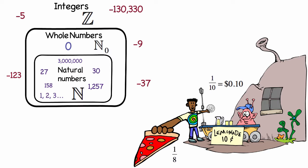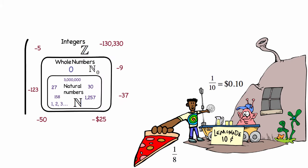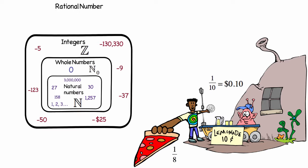When we start including fractions and decimals that can be written as fractions, we're now working with rational numbers. And we use a double-struck Q to represent them. Rational numbers can always be written as a fraction, with an integer in both the numerator and the denominator.